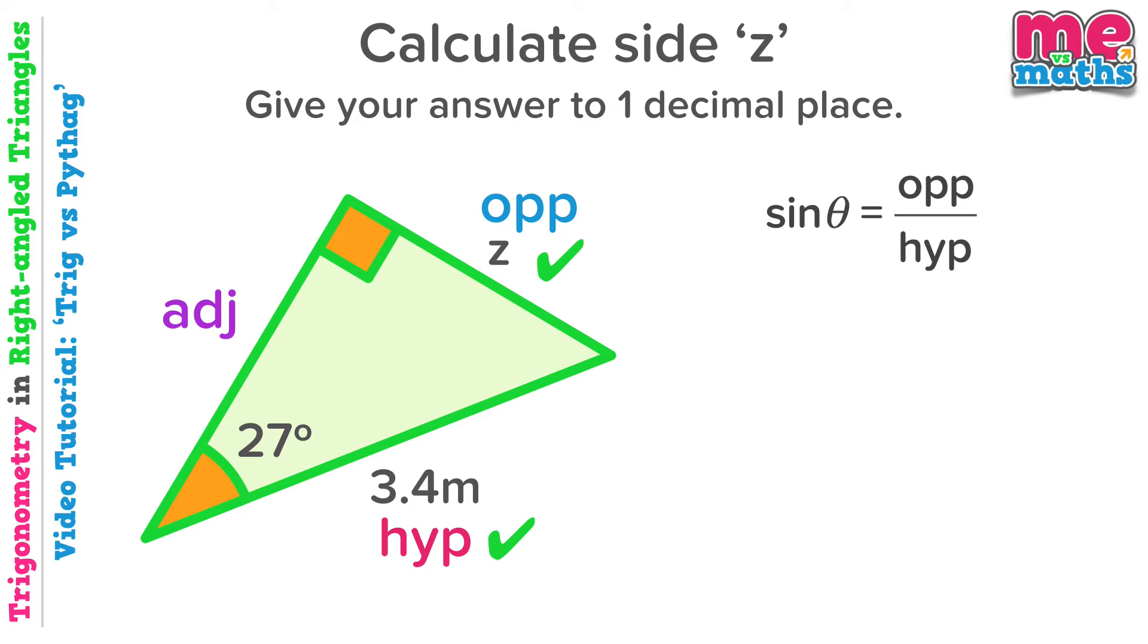Again, I'm not trying to teach you how to do this part. So let's substitute our values in. Multiply sin 27 or sine 27 by 3.4 to give us our final answer for Z.